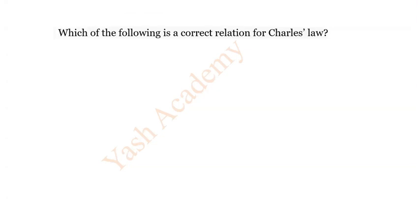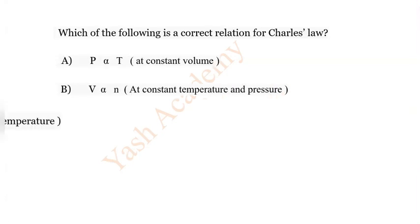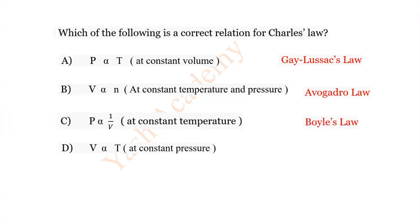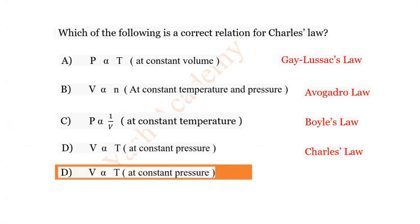Question 22: Which of the following is a correct relation for Charles's law? Options: A) Gay-Lussac's law, B) Avogadro's law, C) Boyle's law, D) Relation for Charles's law. The correct answer is D.